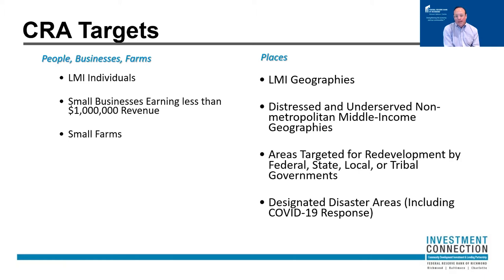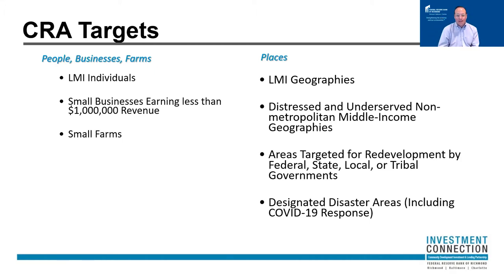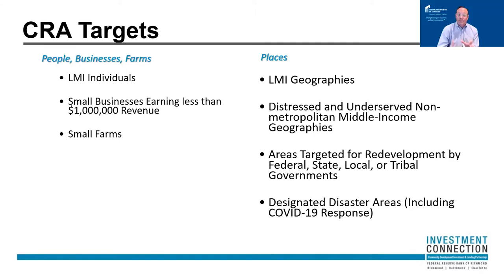Regions already being targeted for redevelopment and disaster areas are also covered. When the Community Reinvestment Act was passed in 1977, a disaster area was primarily thought of as a weather-related or climate-related incident. But as the last 18 months have shown, COVID is actually considered part of that designation of disaster area.